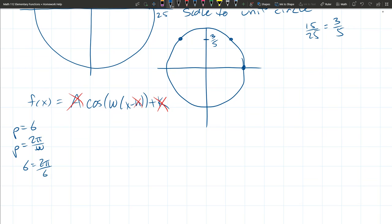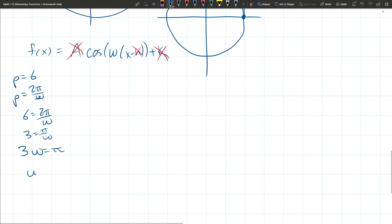Six equals 2π over w, so divide by two. We got three equals π over w. Multiply by w: 3w equals π. Divide by three: π over three. Alright.